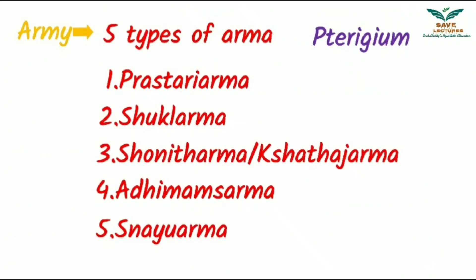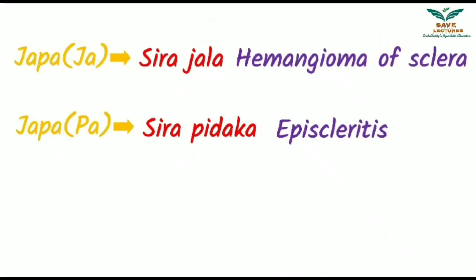Army denotes 5 types of Arma. These are Prastari Arma, Shukla Arma, Shonita Arma or Kshataja Arma, Adhimamsa Arma, and Snayu Arma — and the modern correlation of Arma is Pterygium. In the word Japa, J denotes Shirajala and its modern correlation is Hemangioma of Sclera. The letter P denotes Shirapedika and its modern correlation is Episcleritis.